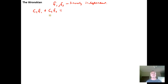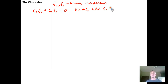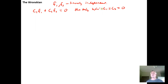We know from linear algebra that if they're linearly independent, that means there exist scalars c₁ and c₂ such that when we set the linear combination c₁f₁ + c₂f₂ equal to 0, the only solution is the trivial solution c₁ = c₂ = 0. There's no other choice for c₁ and c₂ that will zero out this linear combination if f₁ and f₂ are linearly independent.